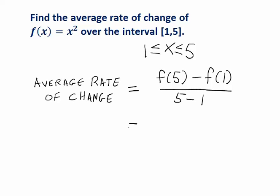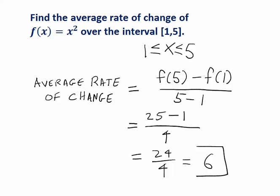So let's evaluate this. f(5), that's 5 squared, 25. Minus f(1), that's 1 squared, which is 1. Divided by 5 minus 1, we can simplify that to get 4. 25 minus 1 is 24. And so this simplifies to just 6. And there were no units in this problem, so we don't have to worry about units in our answer. The average rate of change is 6.